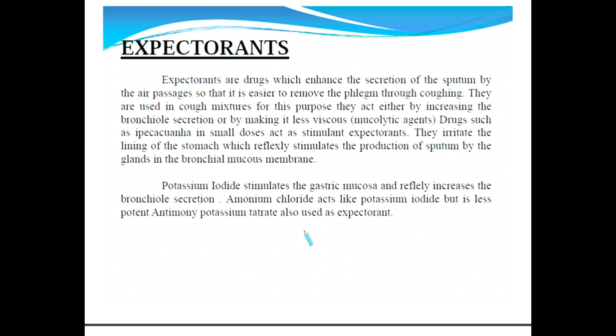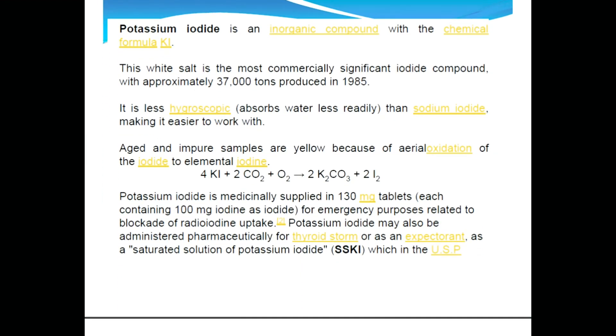Potassium iodide is an inorganic compound with the chemical formula KI. This white salt is the most commercially significant iodide compound, with approximately 37,000 tons produced in 1985. It is less hygroscopic than sodium iodide, making it easier to work with.